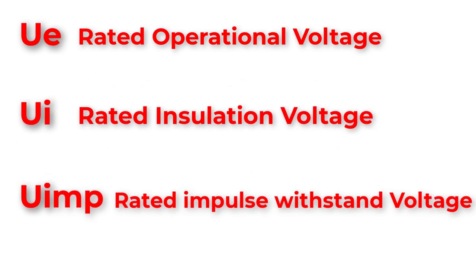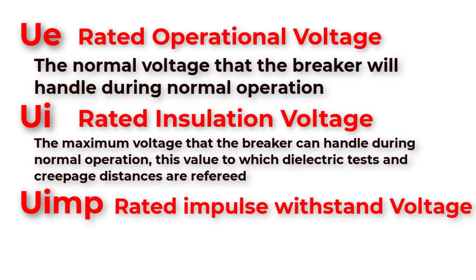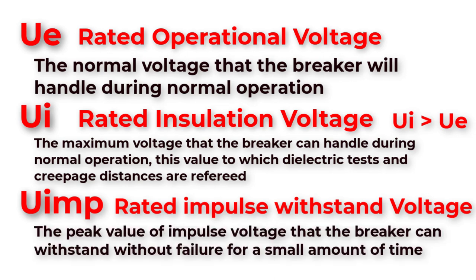The rated operational voltage is the normal voltage that the breaker will handle during normal operation. The rated insulation voltage (Ui) is the maximum voltage that the breaker can handle; the operational voltage shall not exceed this value, and it is the voltage to which dielectric tests and creepage distances are referred. The rated impulse withstand voltage (Uimp) is the peak value of voltage that the breaker can withstand without failure for a short amount of time.